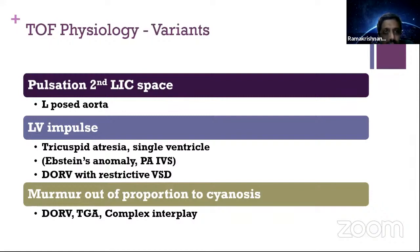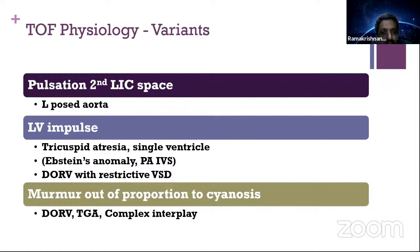Two other differential diagnoses that technically don't fall in tetralogy-like physiology but can present with cyanosis: Epstein's anomaly can present in adulthood, and pulmonary atresia with intact septum — exceptional adult survivors may exist. These are conditions with cyanosis and LV-type impulse that you should know as differentiated angles.